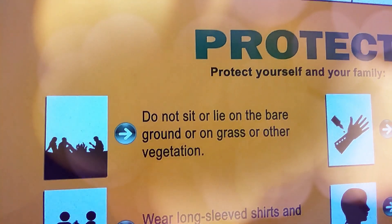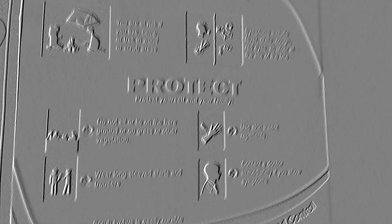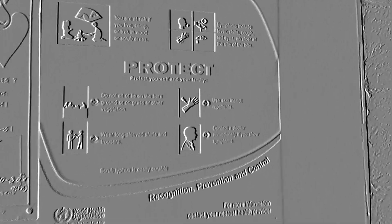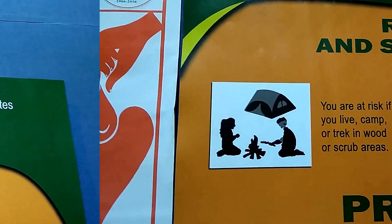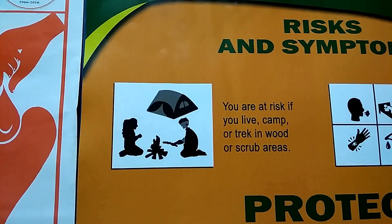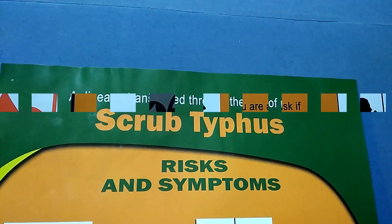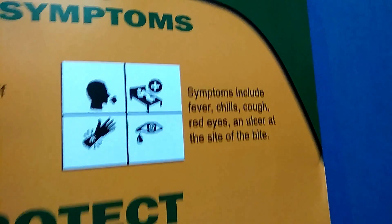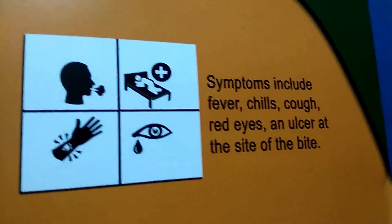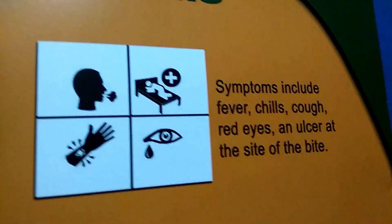Now about risk factors, symptoms, and how to protect yourself and your family. You are at risk if you live near, camp, or trek in wooded or scrub areas. Symptoms include fever, chills, cough, red eyes, and an ulcer at the site of the bite, which can be seen in the picture.